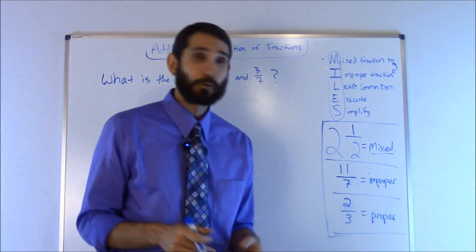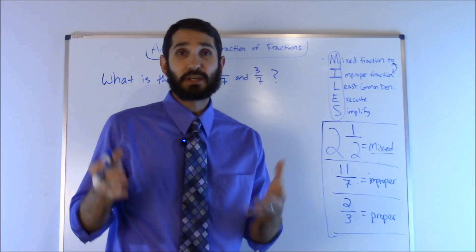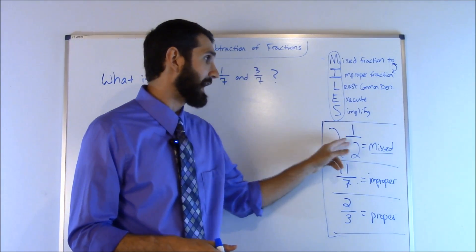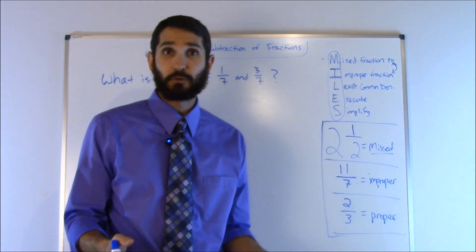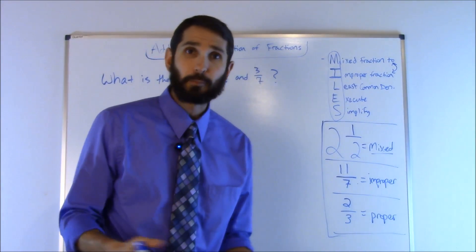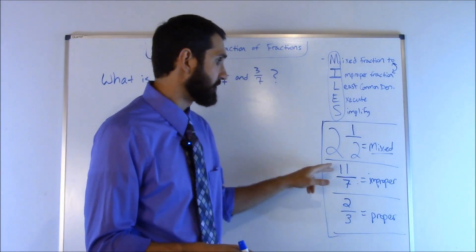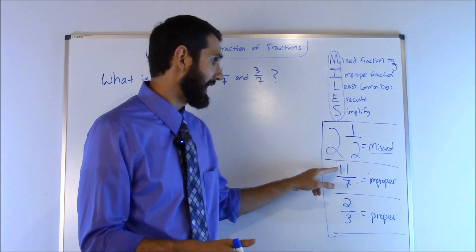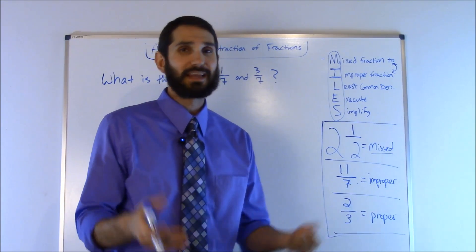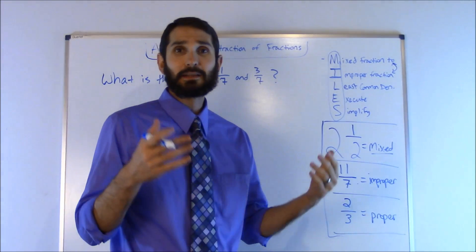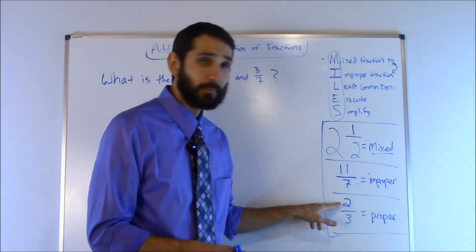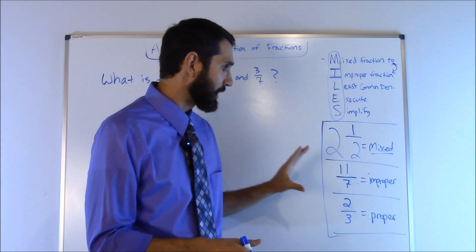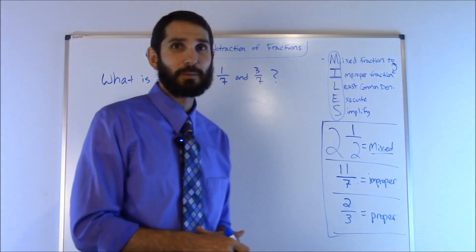Before I get started, let's cover a few principles. You have three basic types of fractions. First, a mixed fraction, where you have a whole number and then a fraction — for example, two and one half. Next, an improper fraction, where the numerator is greater than the denominator, like 11 over 7. Finally, a proper fraction, where the top number is less than the bottom number, like 2 over 3.